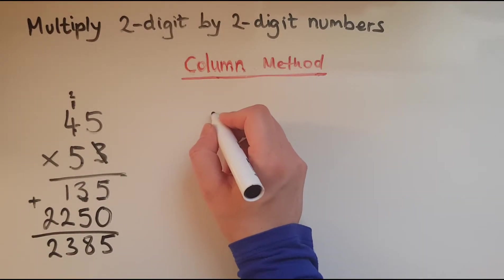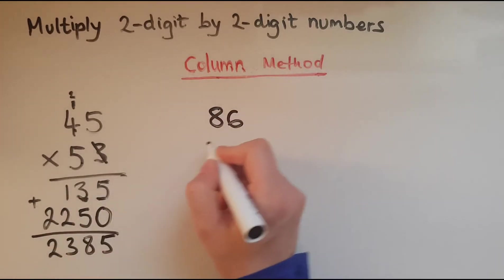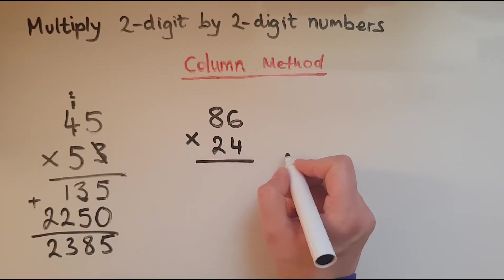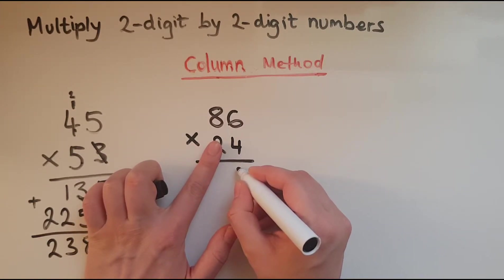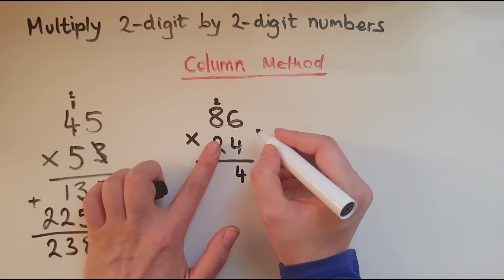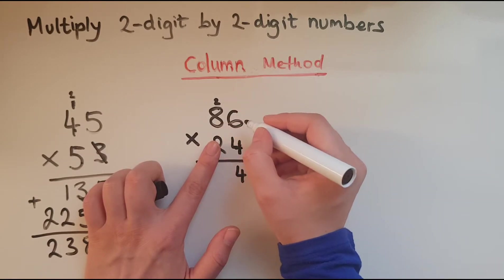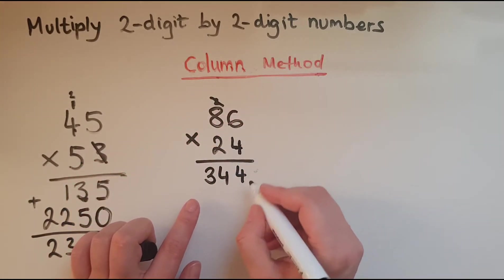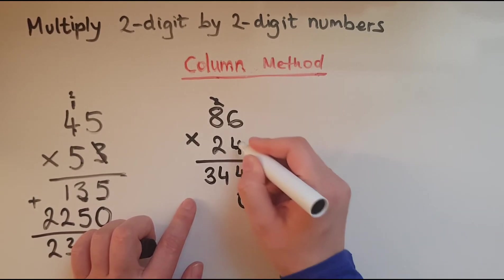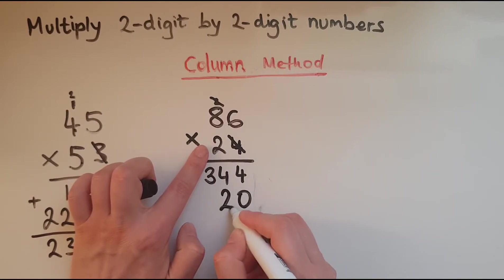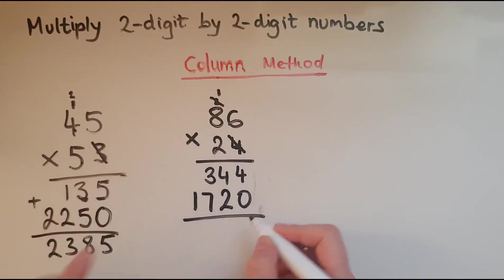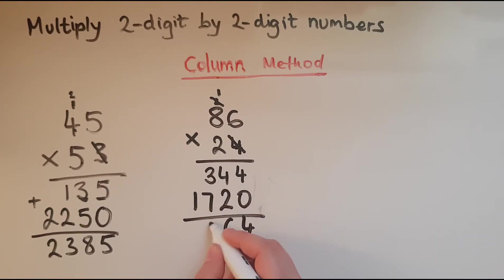Let's look at another example: 86 times 24. Starting with the units: 4 times 6 is 24, so put 4 down and carry 2. 4 times 8 is 32, plus the 2 is 34. Now moving to the 20s: put 0 down; 2 times 6 is 12, put 2 down carry 1; 2 times 8 is 16, plus 1 makes 17. So we get 4, 6, 10 (carry), 2 — giving 2,064.